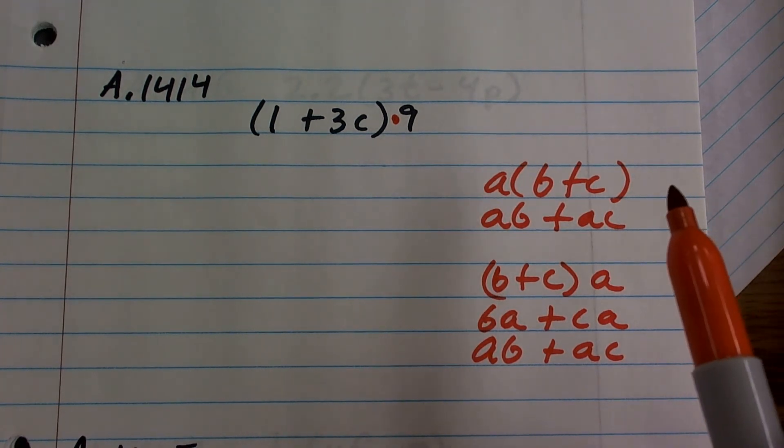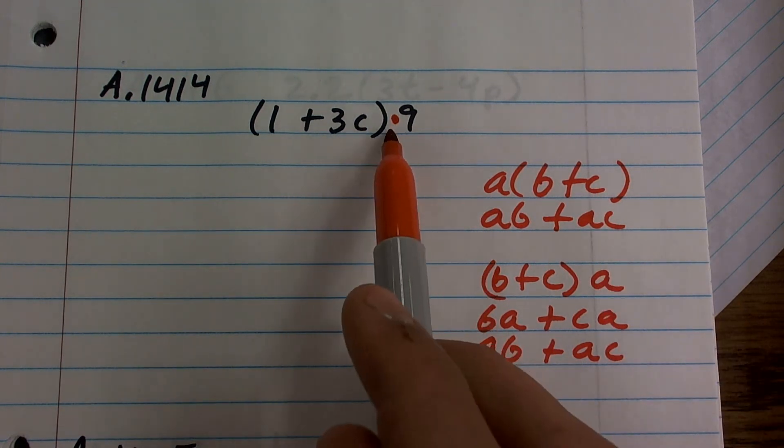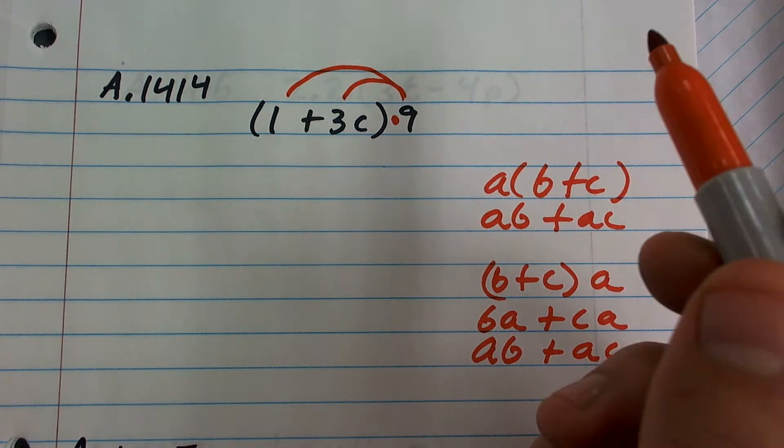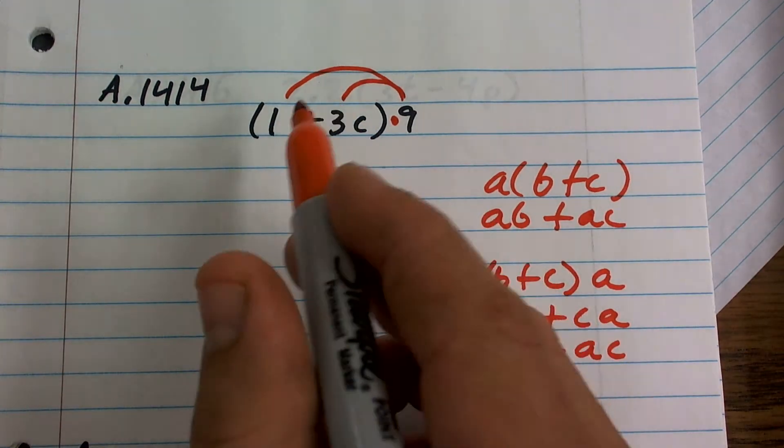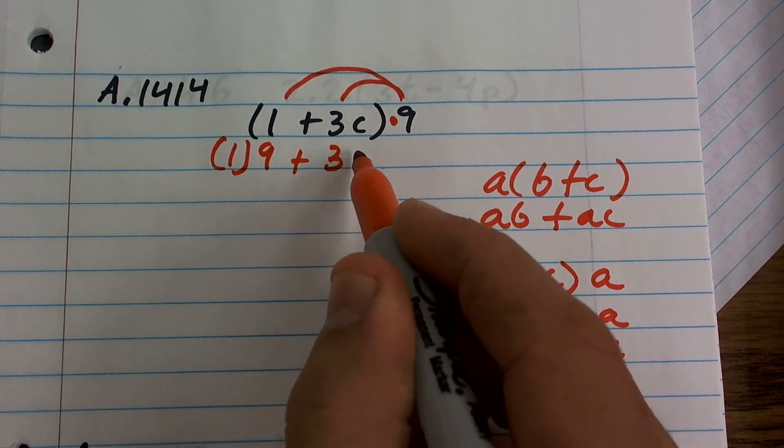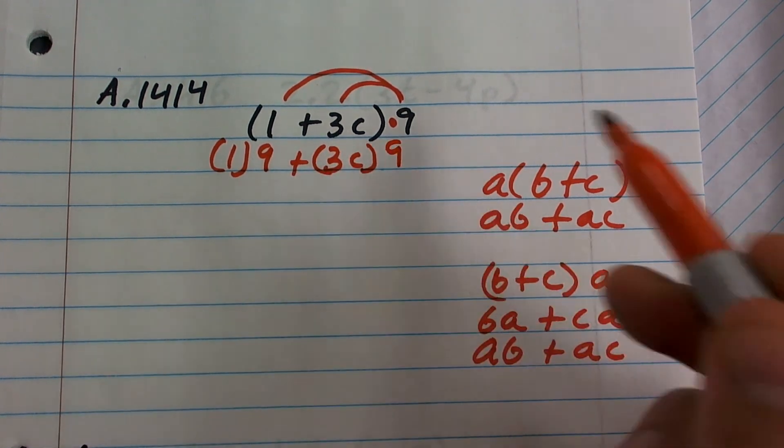Division, we'd see a division sign, or as a fraction. So here we represent it as multiplication, and that just means that I need to multiply this times both of them. So I can write this as 1 times 9 plus 3C times 9.